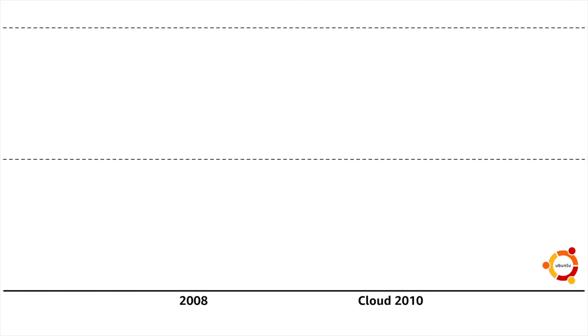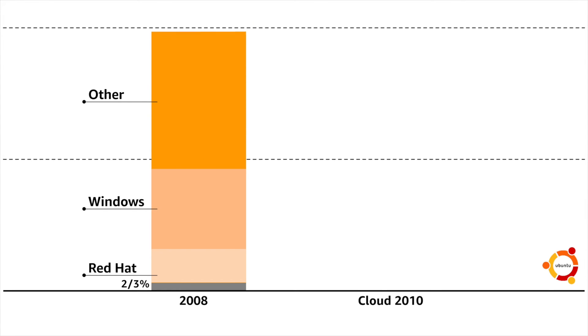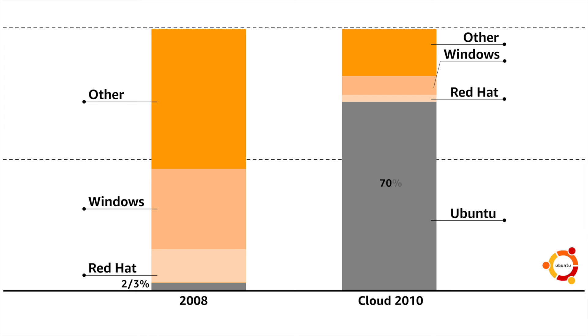This was 2008. The company was Canonical and what we provided was an operating system known as Ubuntu. We were two to three percent of the operating system market against two giants — Red Hat and Microsoft. It took 18 months, it cost half a million pounds, and we went from two to three percent of the market to seventy percent of all cloud computing.